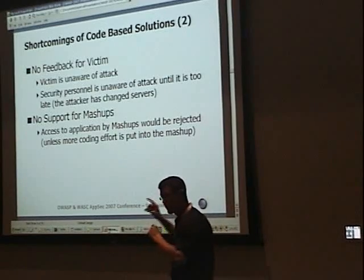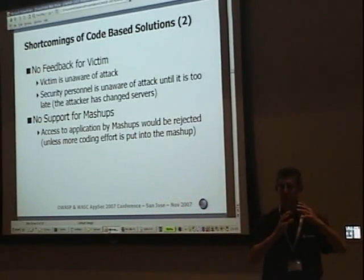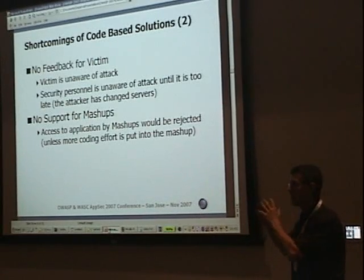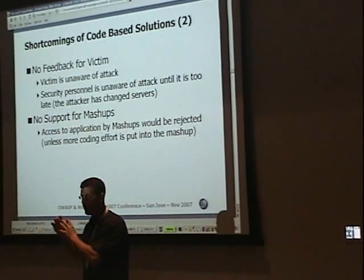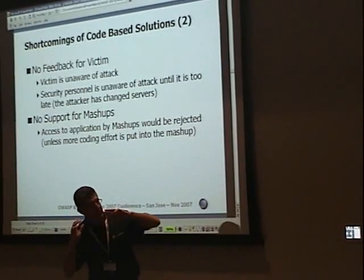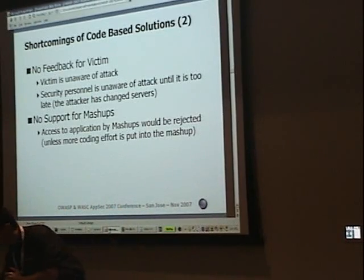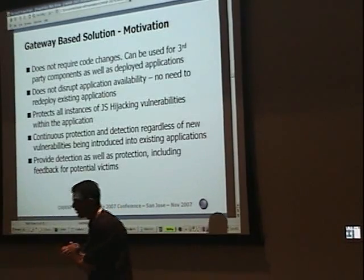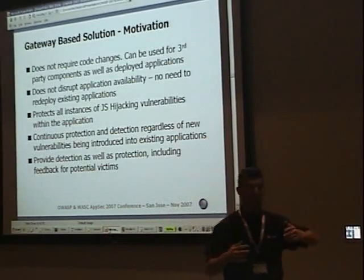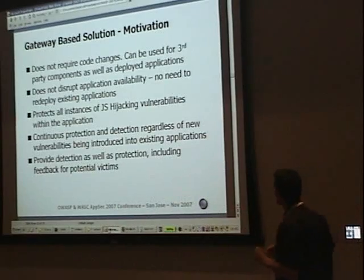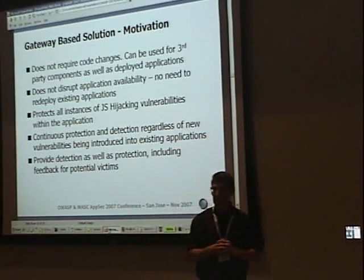Sometimes the request generated by the mashup engine looks very much like it is the result of a cross-site request forgery. So I cannot be decisive about whether this is actually a cross-site request forgery or not. If code-based solutions are not the answer, what is the answer? Let's take a look at gateway-based solutions.